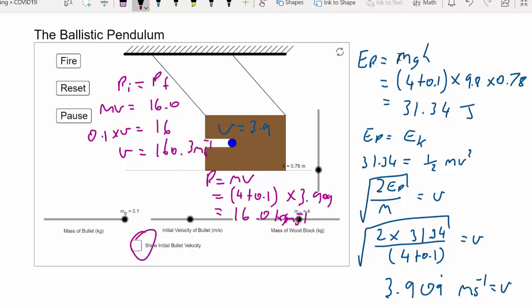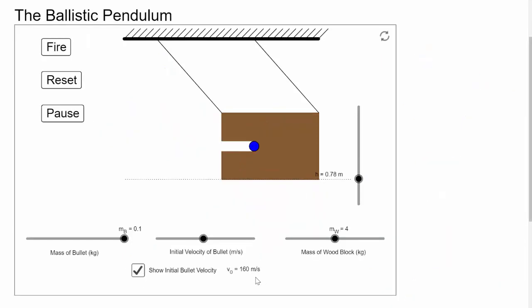Okay. So we're going to click this button, show me the initial speed. And when I do that, I get 160 meters per second. Cool.